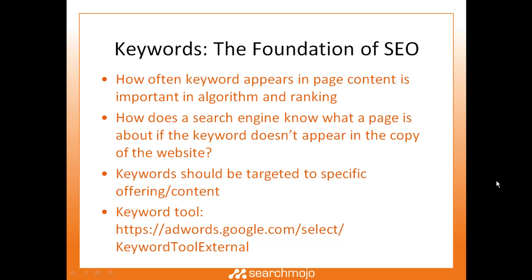Keywords should always be targeted to specific offerings or content. So if you sell running shoes, you want to optimize for running shoes and not dancing shoes. The tool we like to use is the Google AdWords keyword tool — an external tool from Google's pay-per-click advertising program. You can use it to find keywords, find search volumes for keywords, and discover related keywords for the topics you're searching for.